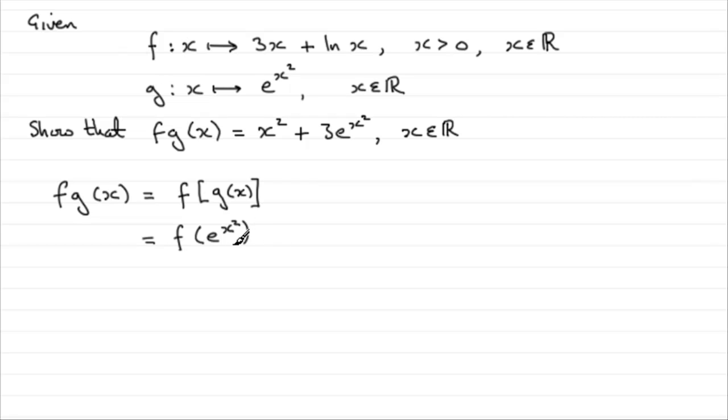Now, wherever we see an x in f, we've got to replace it with e to the x squared. So we have a couple of x values up here, so this is going to be equal to 3 times x, but x is replaced now with e to the x squared. Then we have plus the natural log of what would have been x, but x is now replaced with e to the power of x squared.